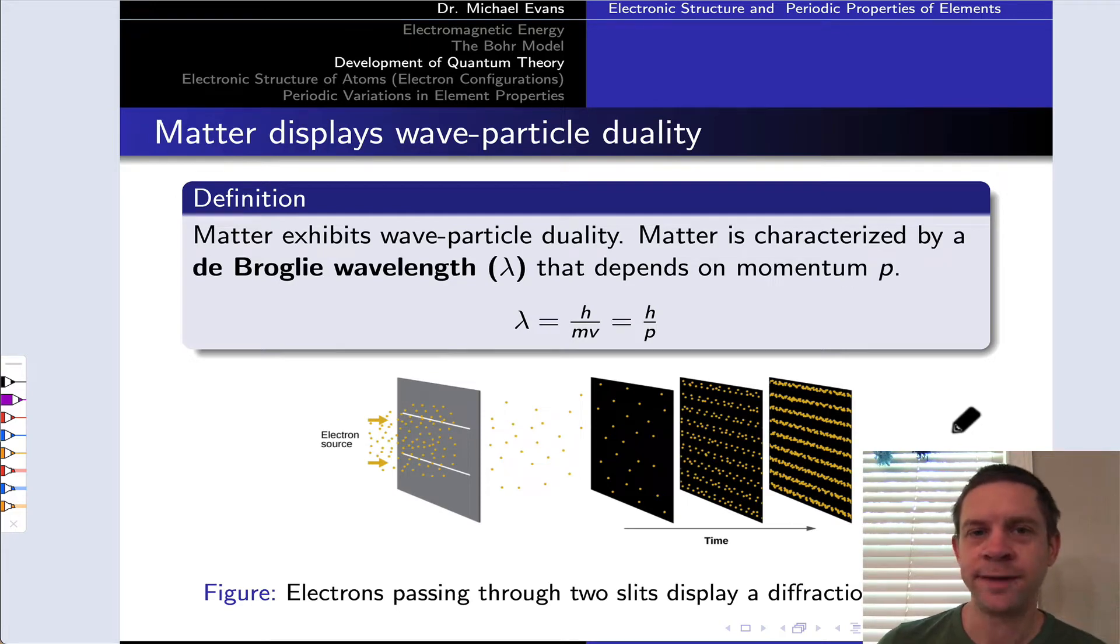In this video, we're going to discuss some foundational concepts from quantum mechanics that led to the quantum model of the atom, which is essentially the modern model of our understanding of what an atom looks like, and in particular, what electrons within the atom look like.